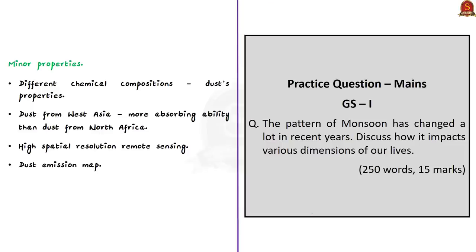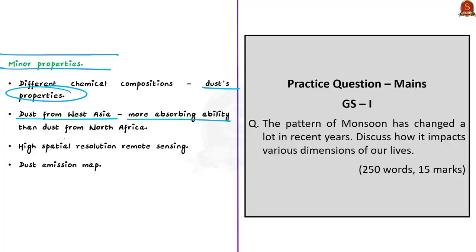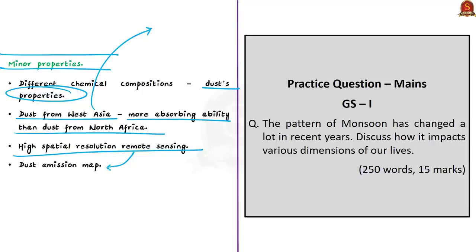Researchers have taken this further by studying the minor properties of dust. Deserts across the globe have different chemical compositions that influence dust's properties. For example, dust from West Asia has more absorbing ability of solar radiation than dust from North Africa. This difference in absorbing ability might influence monsoon systems differently. High spatial resolution remote sensing can also be used to identify source regions of dust and create better dust emission maps.